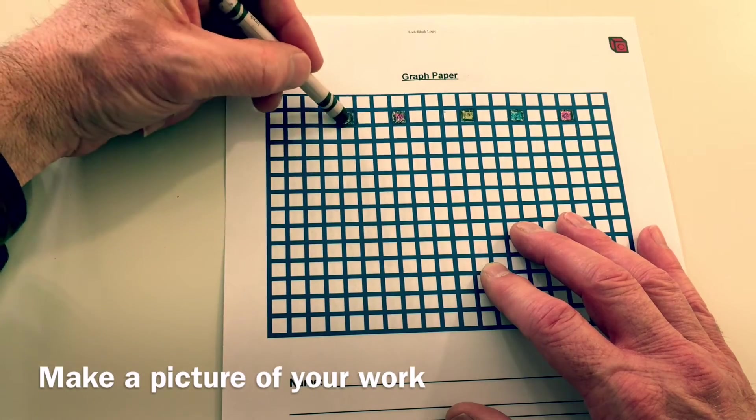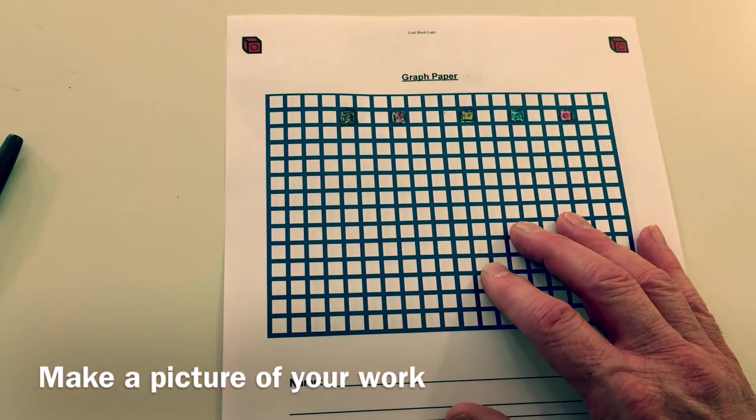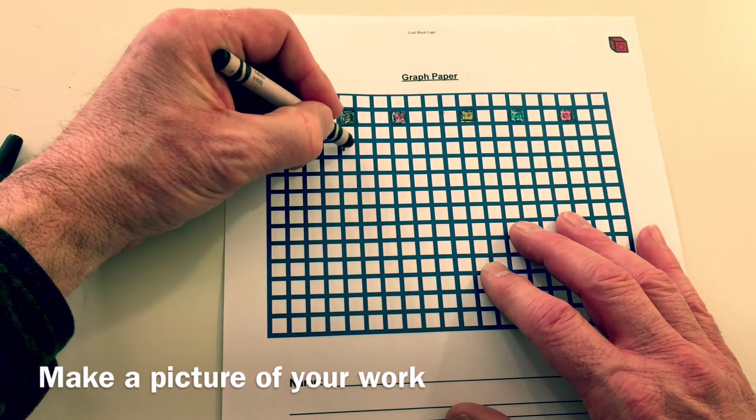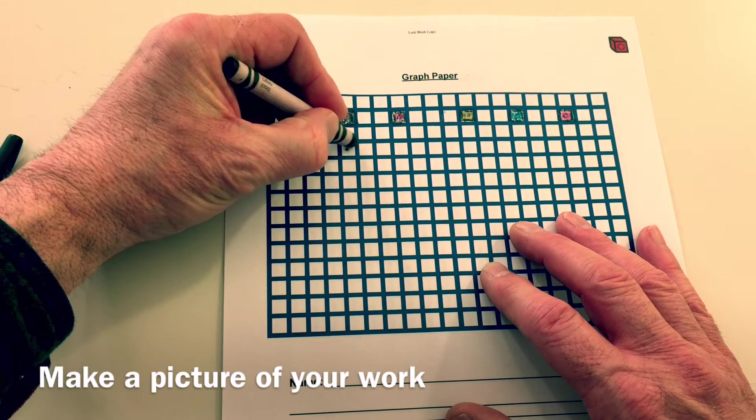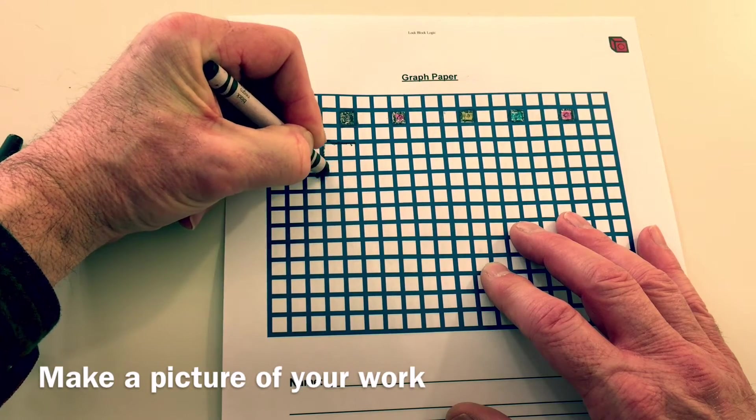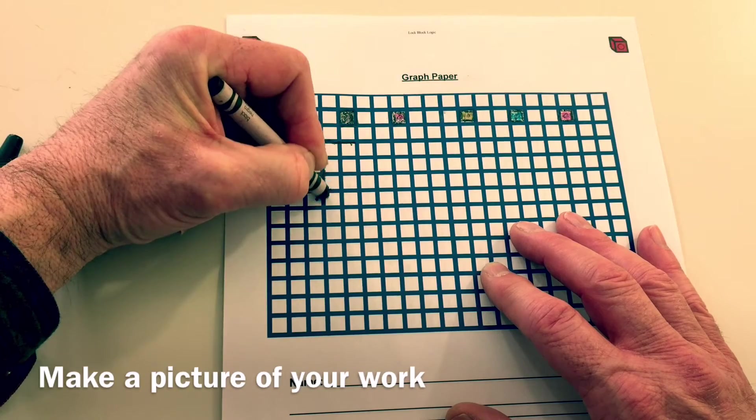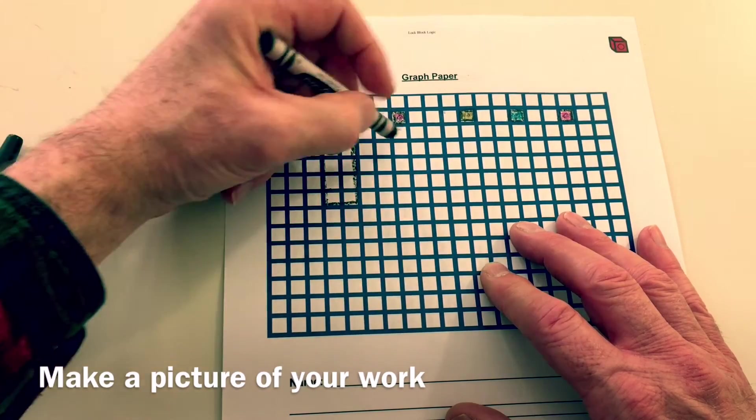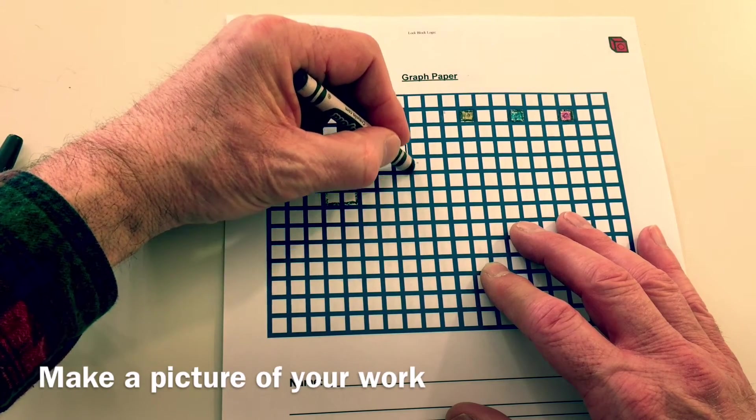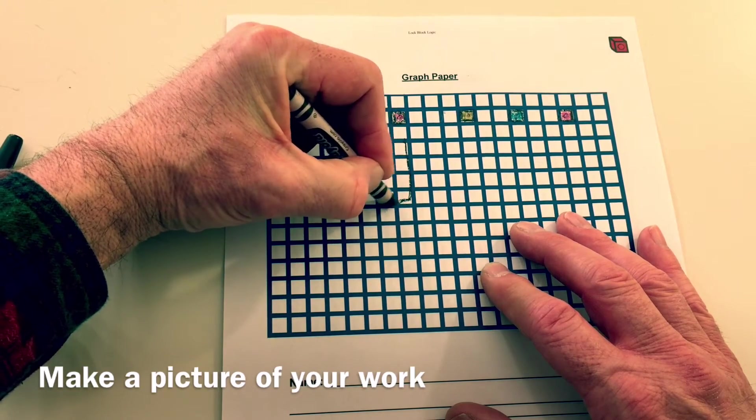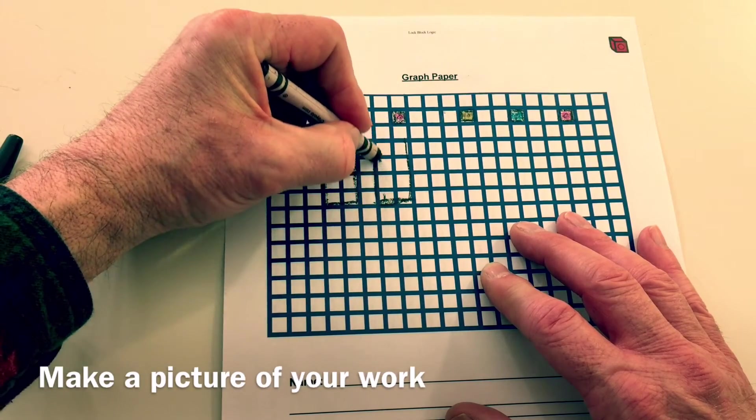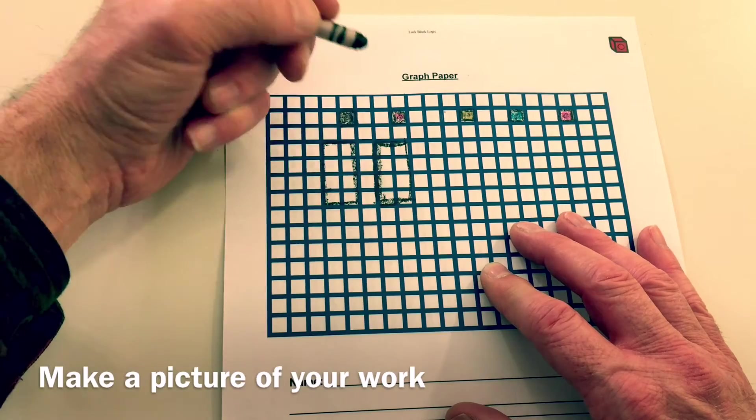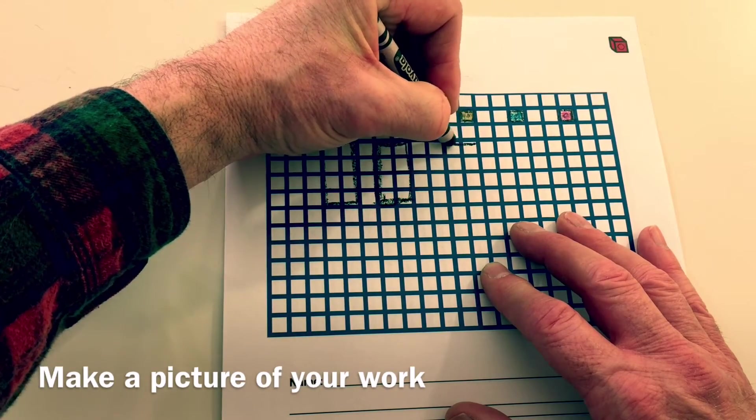So now I have one, two, three, four, five, just like on my blocks. And now I will put the eight blocks down and outline them. Okay, there's one eight block. Here's two, here's a third one.